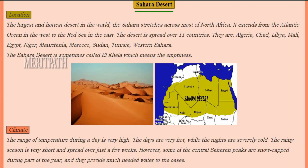Let's learn about a new chapter called Life in the Deserts, Sahara and Ladakh. First, let's see about the Sahara Desert. As for its location, it is the largest and hottest desert in the world, and it stretches across most of northern Africa.